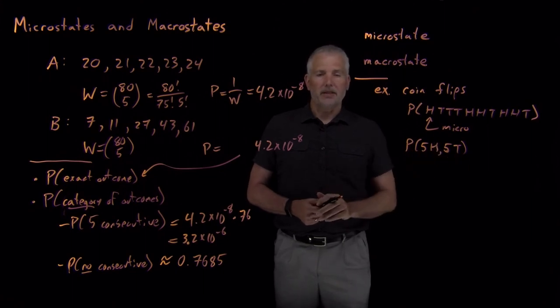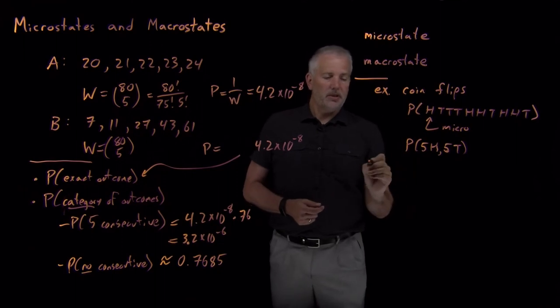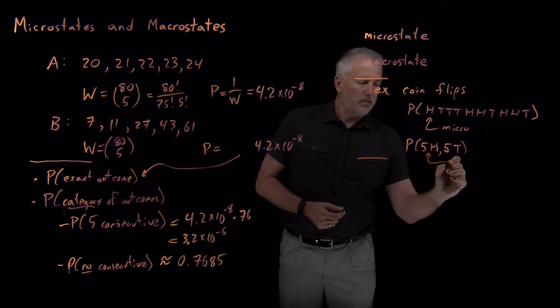That larger scale description of how many heads and how many tails I've gotten. So we've seen before how to calculate those numbers in a more chemistry context. So that would be an example of a macrostate.